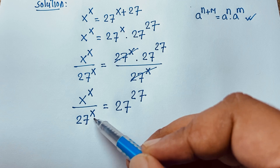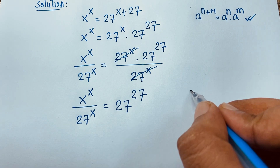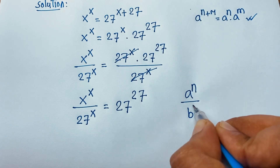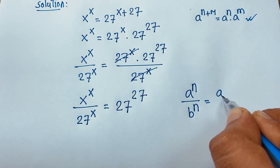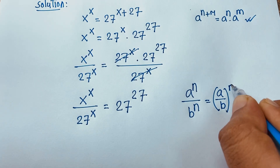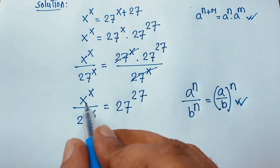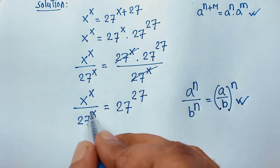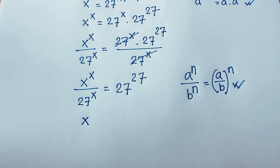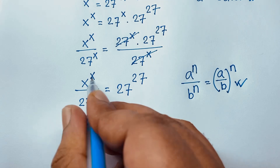Now at this moment, you can see the exponent is x on both sides. Going to the exponential law, we know that a to the power n divided by b to the power n equals a over b, whole to the power n. According to this formula, since the exponent is the same, it will be x over 27, in brackets, to the power x.